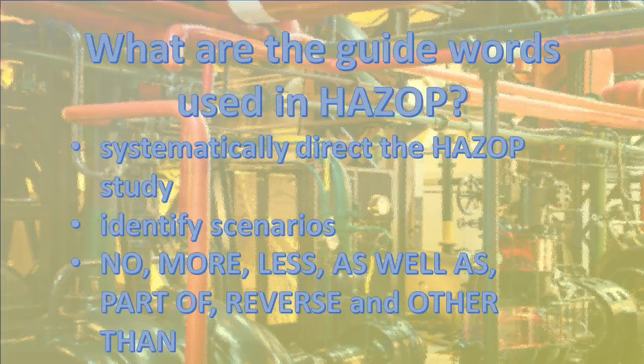What are the guide words used in HAZOP? Guide words are words or phrases that, when considered together with a parameter, form a hypothetical deviation for the HAZOP team to consider. They are used to systematically direct the HAZOP study and identify scenarios, missing information, errors, or deviations from an intended activity that could lead to an undesired event.